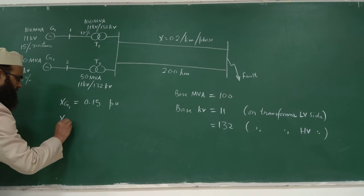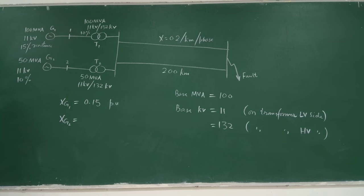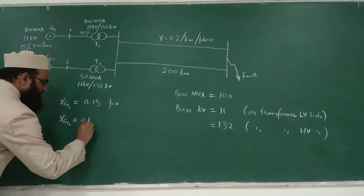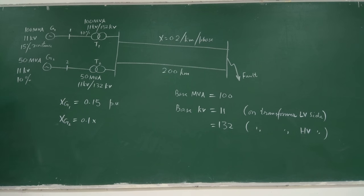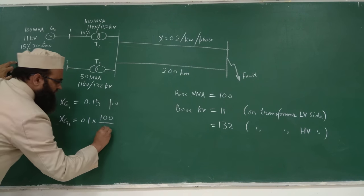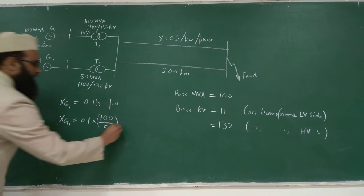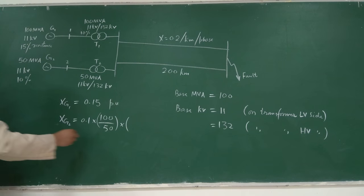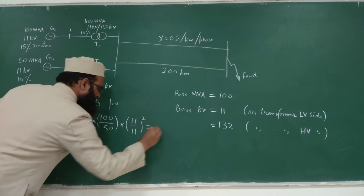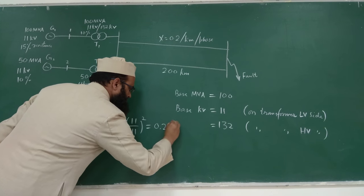For generator G2: apply the per unit conversion formula. X_G2_new = X_G2_old × (MVA_new / MVA_old) × (KV_old / KV_new)². With X_old = 0.1, MVA_new = 100, MVA_old = 50, KV_old = KV_new = 11 KV, we get X_G2_new = 0.1 × (100/50) × (11/11)² = 0.2 per unit.